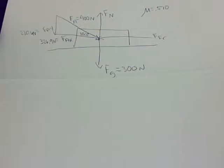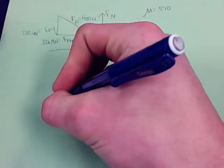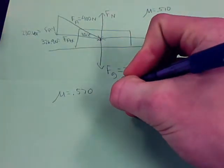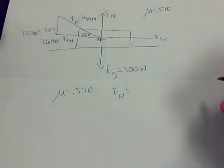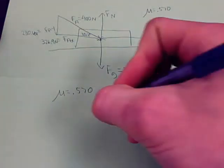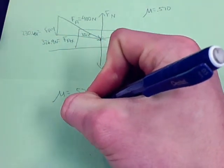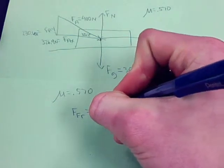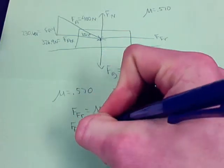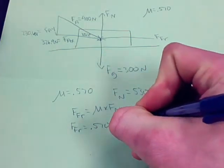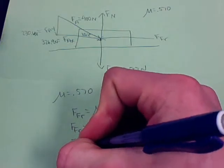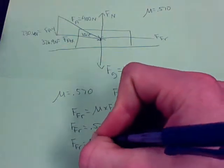Now we're going to find our force of friction. Our mu was given to us. It was .570. And we now know our normal force, which was 530.6 newtons. So we can write our friction equation down, which is mu times Fn equals force of friction. And so once we add numbers into that, it's going to be .570 times 530.6 equals friction. And your answer comes out to be, for friction, 302.4 newtons.